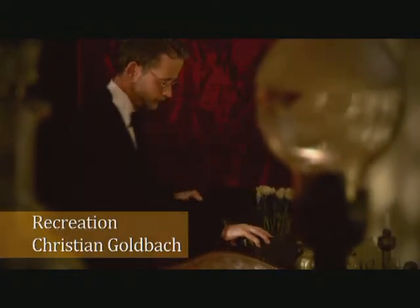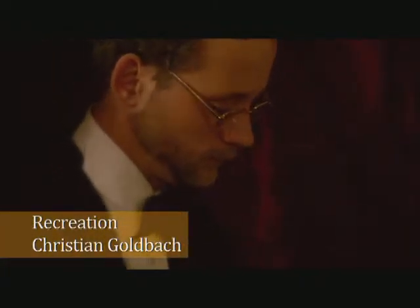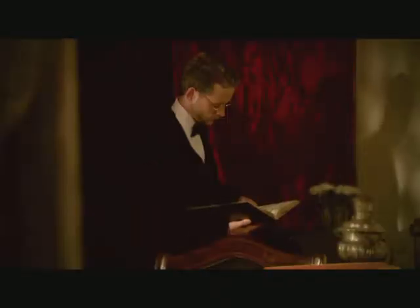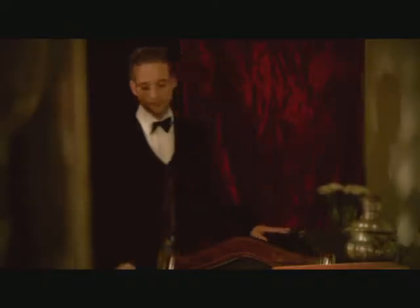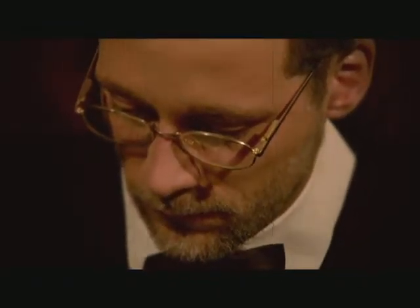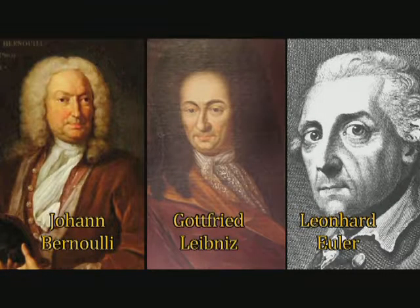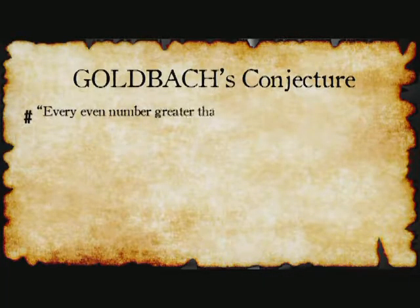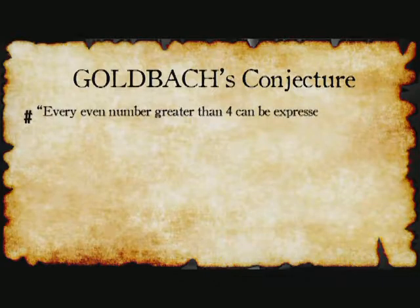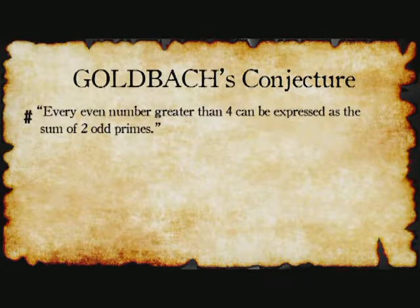Now this idea of prime numbers being the building blocks of all other numbers became even more tangible with a conjecture by a mathematician called Christian Goldbach. Goldbach was born in Königsberg, which is in modern-day Russia now. He was a friend of many of the great scientific minds of that time: Leibniz, Bernoulli, Euler, to name a few. He and Euler corresponded, and in one letter in 1742, Goldbach theorized: every even number greater than 4 can be expressed as the sum of two odd primes.